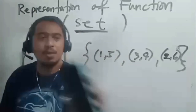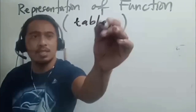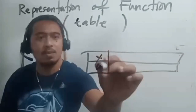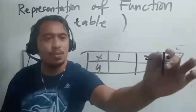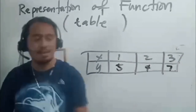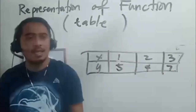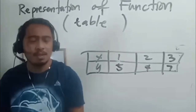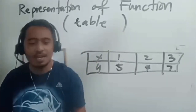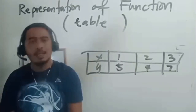How about using a table? In the table, you will have x and y. For example, x values are 1, 2, 3 and y values are 5, 4, 7. If you cannot see any value of x being repeated, then it is a function. But if even one value of x is repeated, then it is not a function anymore. It is very simple for mapping, set, and table.